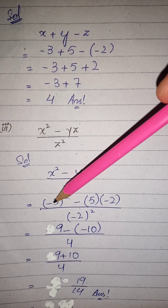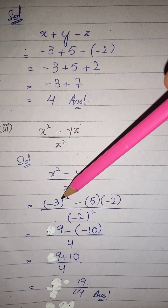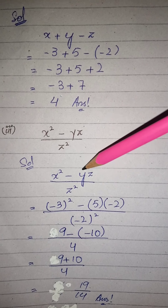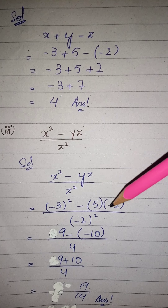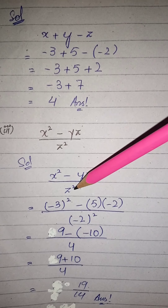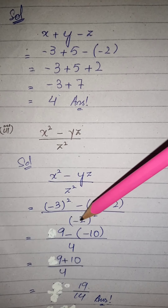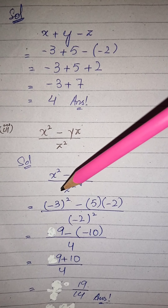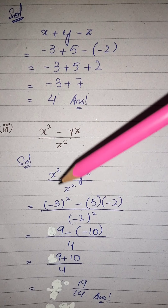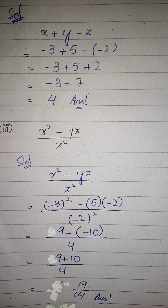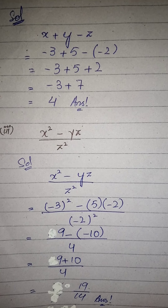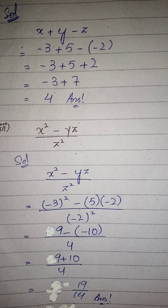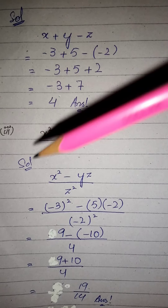x کی جگہ minus 3 bracket میں لکھ کر square کریں، پھر minus، پھر y کی value 5 اور z کی value minus 2 multiply کریں، اور نیچے z کی value minus 2 bracket میں لکھ کر square کریں۔ جب minus پر even power ہو جیسے square تو minus plus ہو جاتا ہے۔